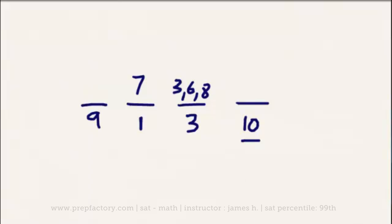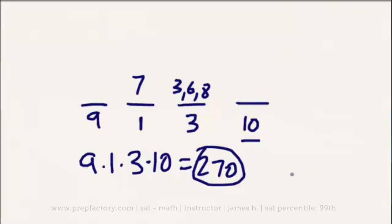So now, basically, to find the total number of possible combinations here, all you need to do is multiply together all of your numbers. So we're going to have nine times one times three times ten. Let's move backwards. Ten times three is thirty. Thirty times one is thirty. And thirty times nine is 270. There are 270 possible four-digit numbers that meet these criteria, of having a seven in the hundredths digit and having a three, six, or eight in the tens digit.